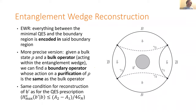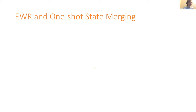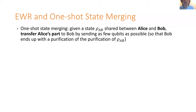The final thing I want to say is that this is essentially the same thing as something from quantum information called one-shot quantum state merging. The starting point is that you have some noisy state rho_AB shared between Alice and Bob, and the task is to send Alice's part of the state over to Bob by sending as few qubits as possible. You want Bob to end up with a very good purification of the reference system. This is really just the Schrödinger picture version of entanglement wedge reconstruction.